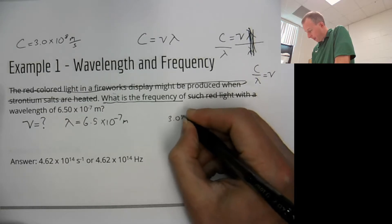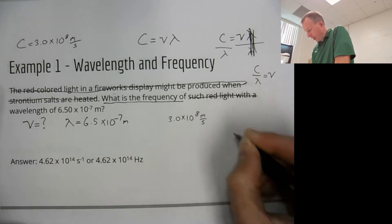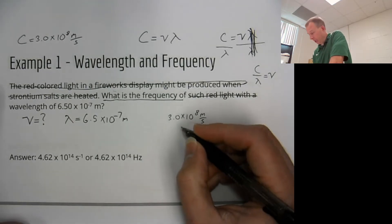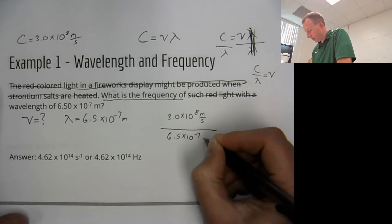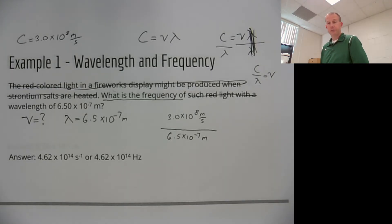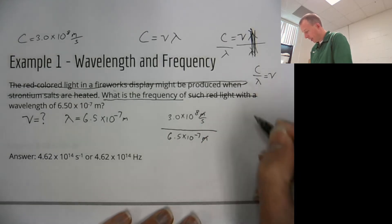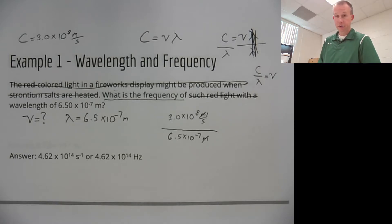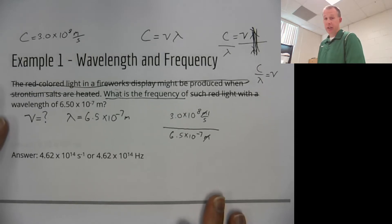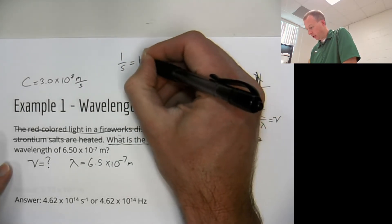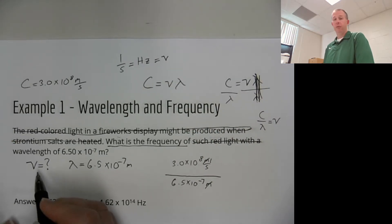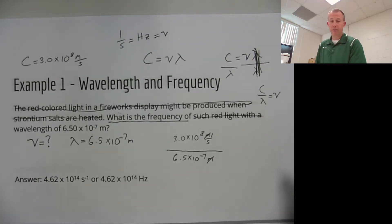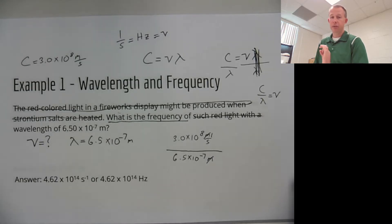We're going to put 3.0 times 10 to the 8th meters per second on top. It's very important that you label your units — I'll show you why in a second. The wavelength is 6.5 times 10 to the negative 7th meters. When you divide these, the meters unit cancels out and you're left with 1 over S — that's a good unit. One over S equals hertz, which is our unit for frequency. If you write it out and label it correctly, it will always work out. If the units don't cancel, you did it wrong.